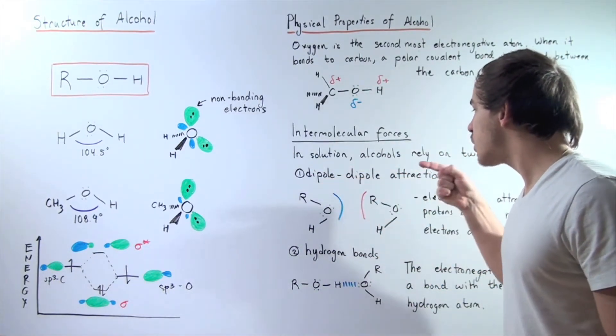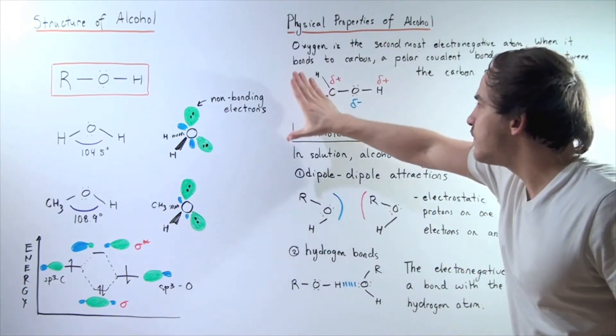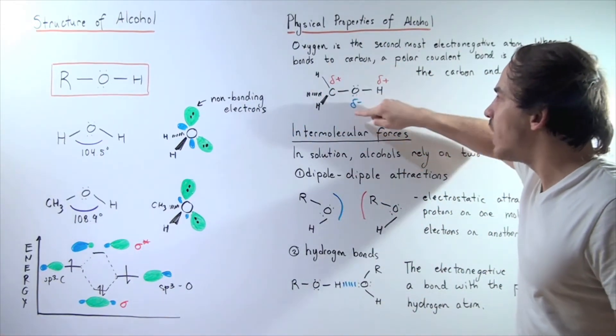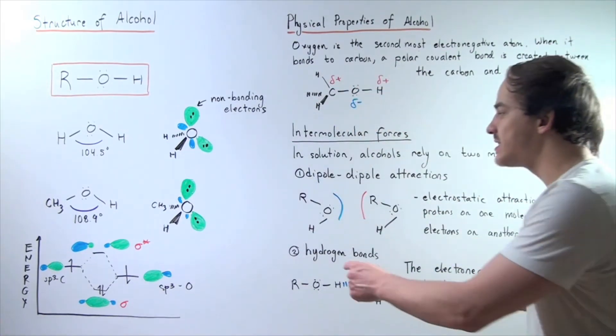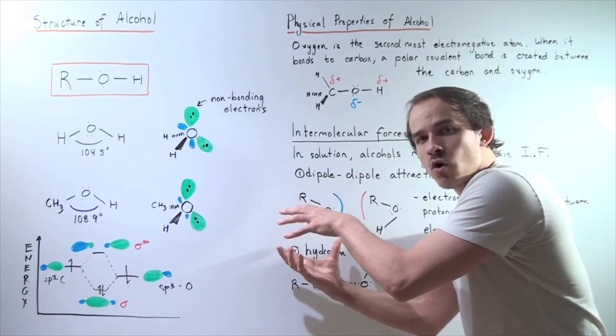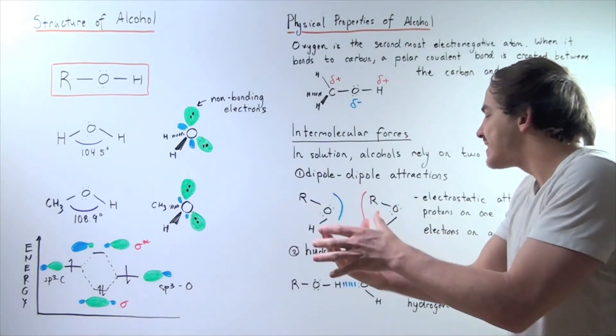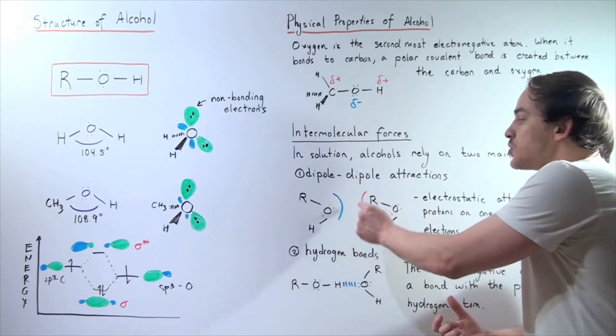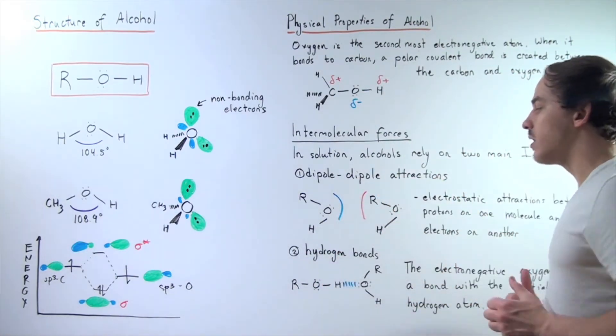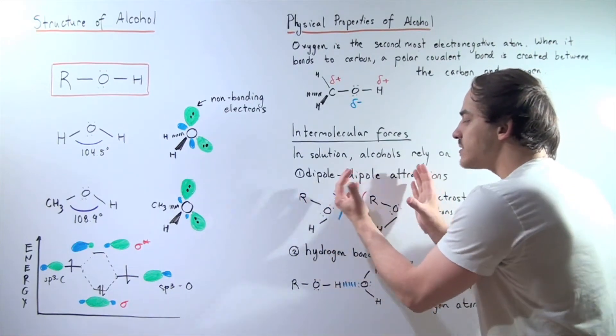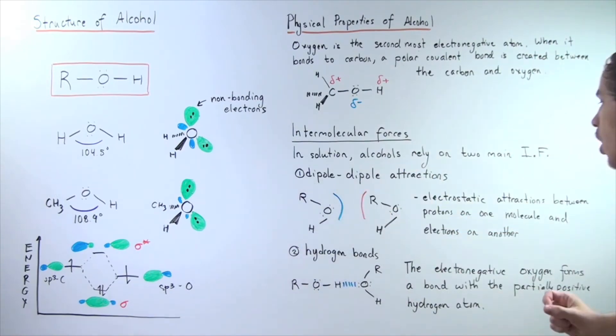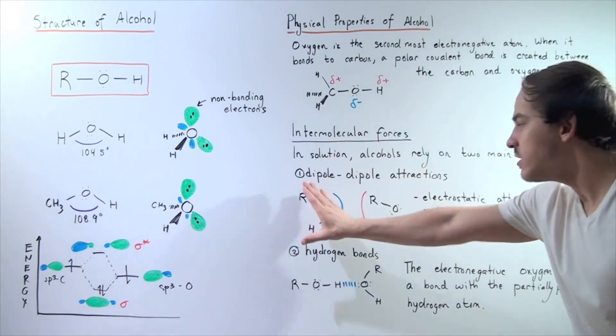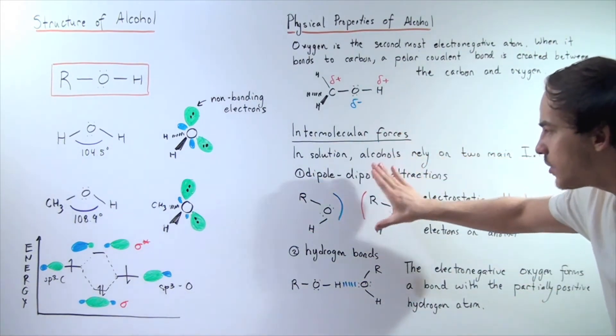These dipole-dipole attractions come from this fact here. Because we have a partial negative on the oxygen and the partial positive on the carbon and H, what happens is the partial negative on one of the alcohol molecules reacts electrostatically with the partial positive on the other molecule. There is this plus-minus interaction between the two charges. Dipole-dipole attractions are electrostatic attractions between the protons on one of the atoms and the electrons on the other atom.